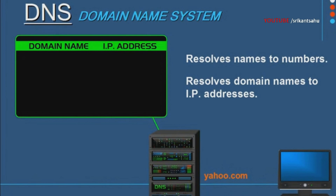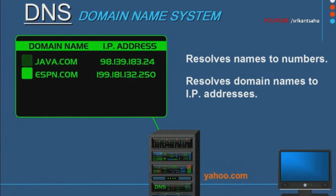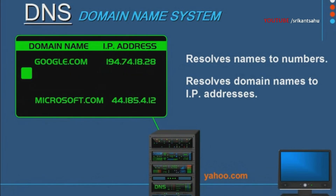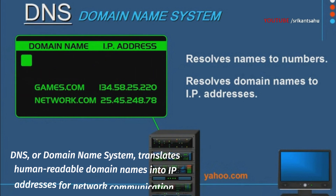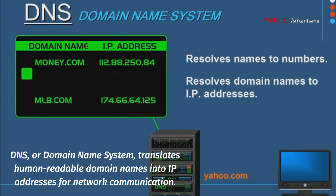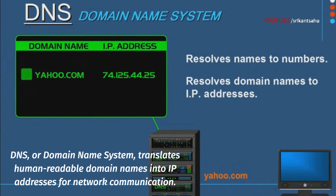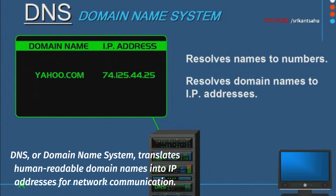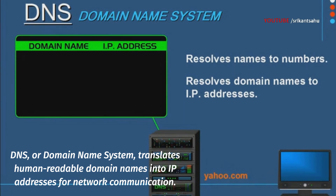DNS, Domain Name System, translates human-readable domain names into IP addresses. It operates as a distributed database, facilitating efficient and scalable resolution of domain names to IP addresses. DNS operates on port 53, using both UDP and TCP — UDP being the default for normal queries and TCP used for larger data transfers.